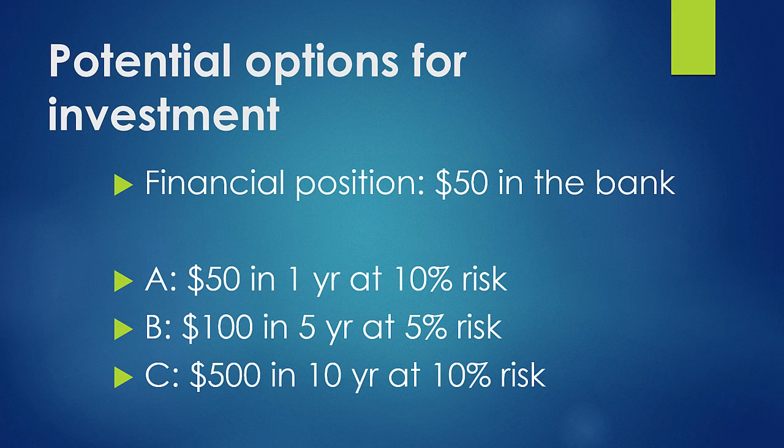Let's talk about an application. In practice, you actually use present value more often than future value, because what you're usually doing is evaluating several different investment options. In investment, you're going to receive some value in the future. Let's look at a specific example. Say you have $50 in the bank and you're looking at three potential investment options. The first option: you receive $50 in one year with 10% risk. The second option: you receive $100 in five years at 5% risk. And the third option: you receive $500 in 10 years at 10% risk.